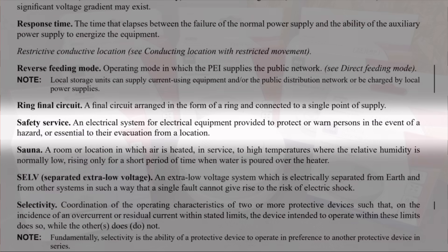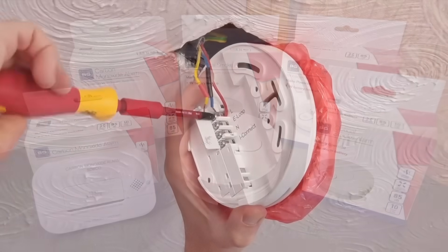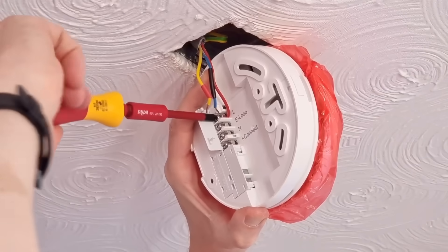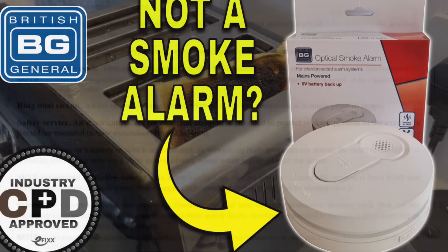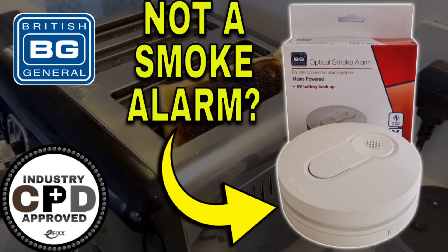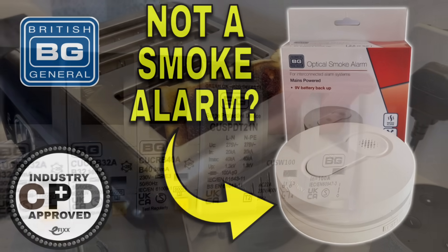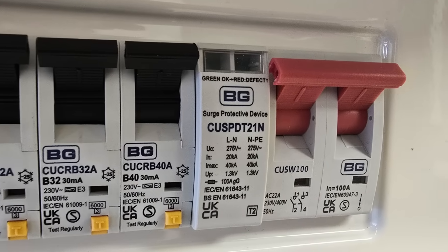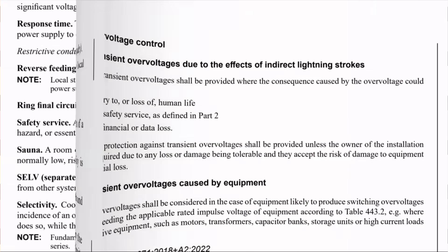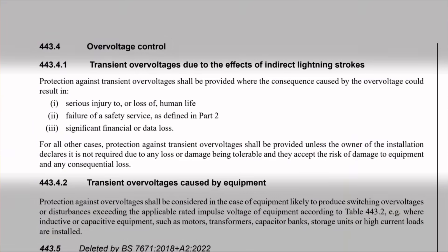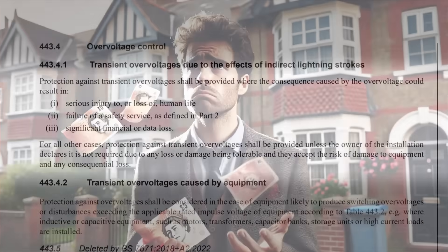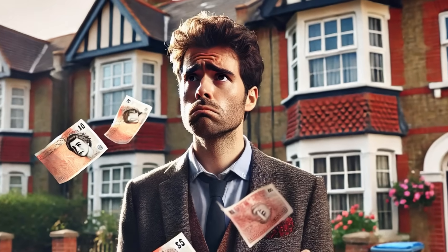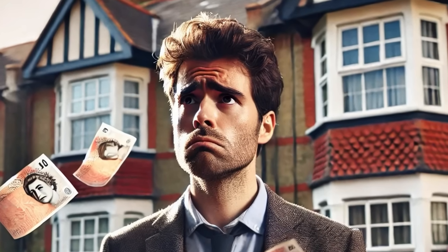So this could well include a domestic hardwired fire alarm - see our free training package on domestic fire alarms for more information - meaning that most domestic properties would require surge protection. And finally, three: significant financial or data loss. Again, under the auspices of late-stage capitalism, there's nothing more likely to make people install surge protection than the thought of losing money.